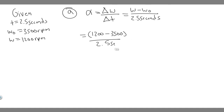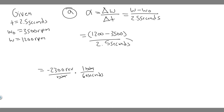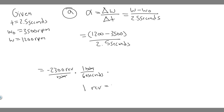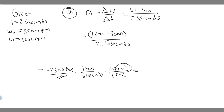Let me rewrite this. So 1200 minus 3500 is minus 2300 RPM — revolutions per minute. To convert to radians per second, we multiply by one minute over 60 seconds to get rid of the minutes, and then multiply by two pi radians over one revolution — because one revolution equals two pi radians. That cancels revolutions, and we're left with radians over seconds.